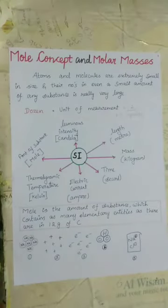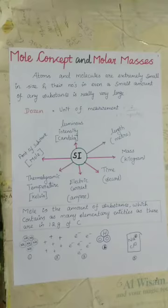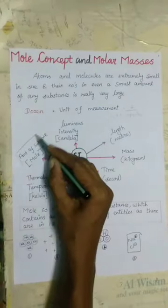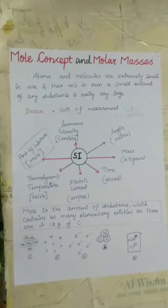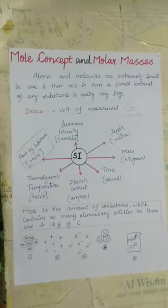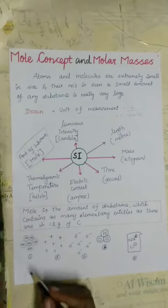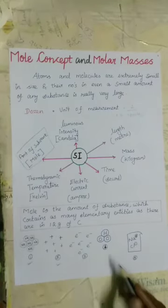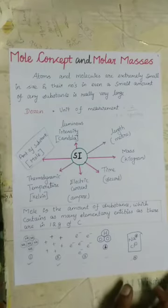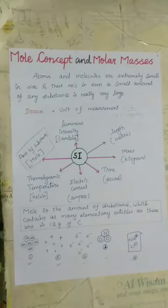When scientists are working with elements and compounds, they have to use a unit of measurement to count quantities at the microscopic level. So, this SI base unit introduces the amount of substance. The mole is the amount of substance which contains as many elementary entities as there are in 12 grams of carbon. The elementary entities may be atoms, molecules, protons, electrons, or ions. Note that 1 mole of a substance always contains the same number of entities, irrespective of the identity and kind of the substance.